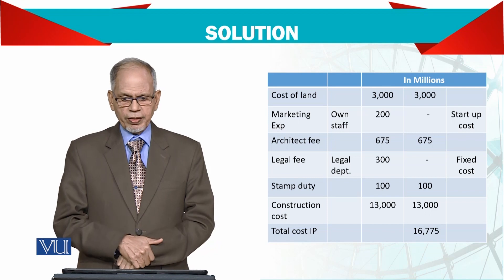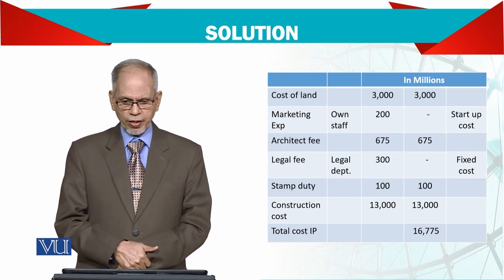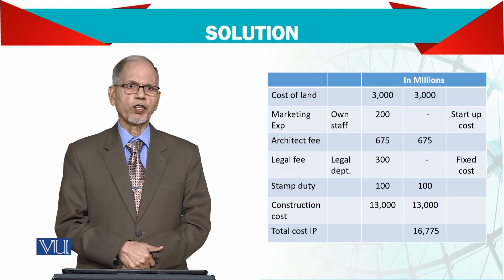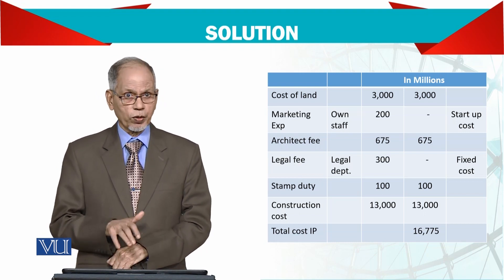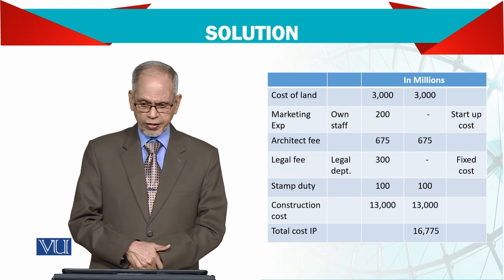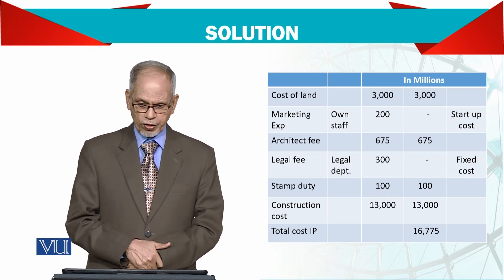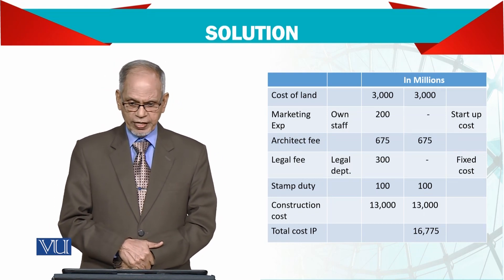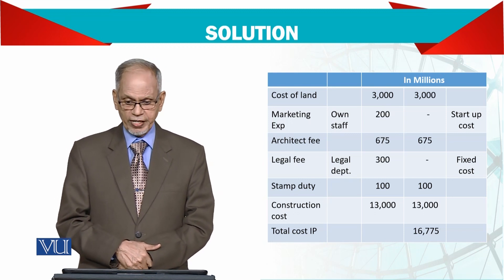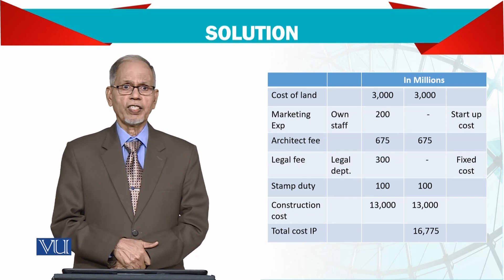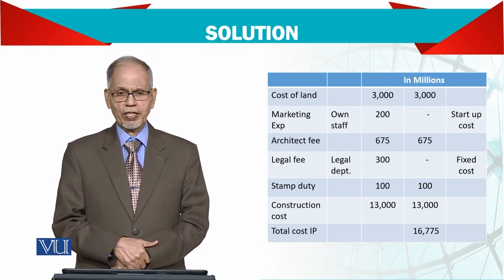Look here. Property cost of land — and marketing expenses will not be added because they are your own staff. Architect fee we should add. Legal fee — again your own department, so should not be added. Stamp duty to be added. And then your construction cost to be added. So the total cost of this investment property comes to 16,775.